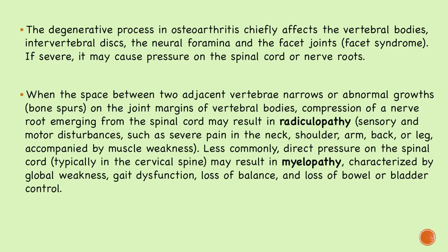The degenerative processes in spinal osteoarthritis affect the vertebral bodies, the intervertebral discs, the neural foramina — the apertures from where nerves exit the spine — and the facet joints, also called zygapophysial joints or Z joints. When the space between two adjacent vertebras narrows, it results in abnormal bone growth called bony spurs or osteophytes. These osteophytes compress the nerve root exiting from the neural foramina, resulting in radiculopathies.